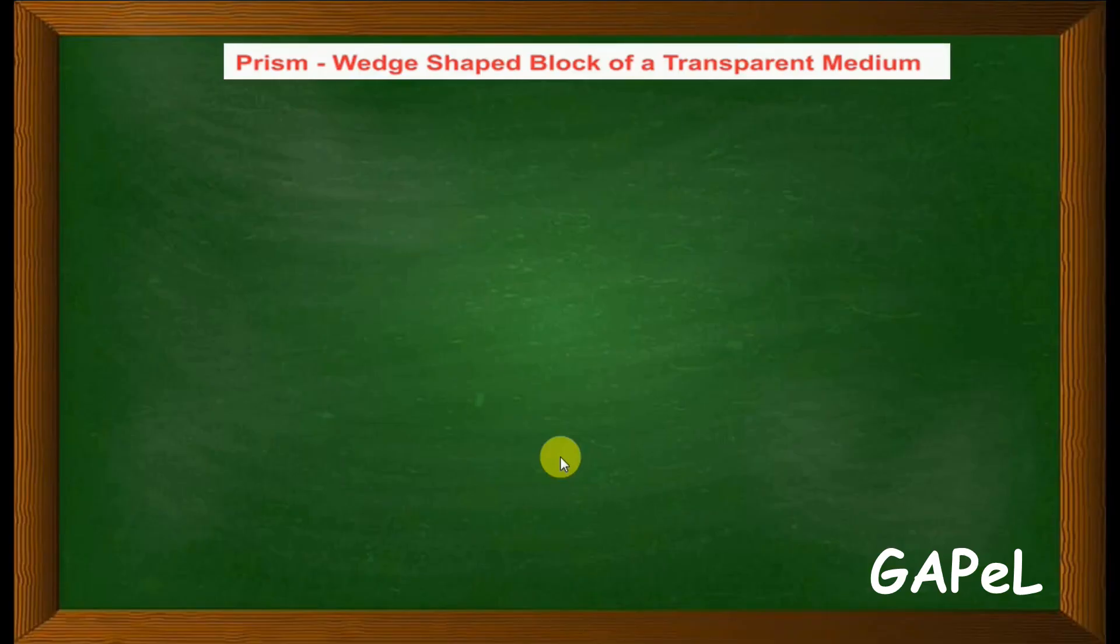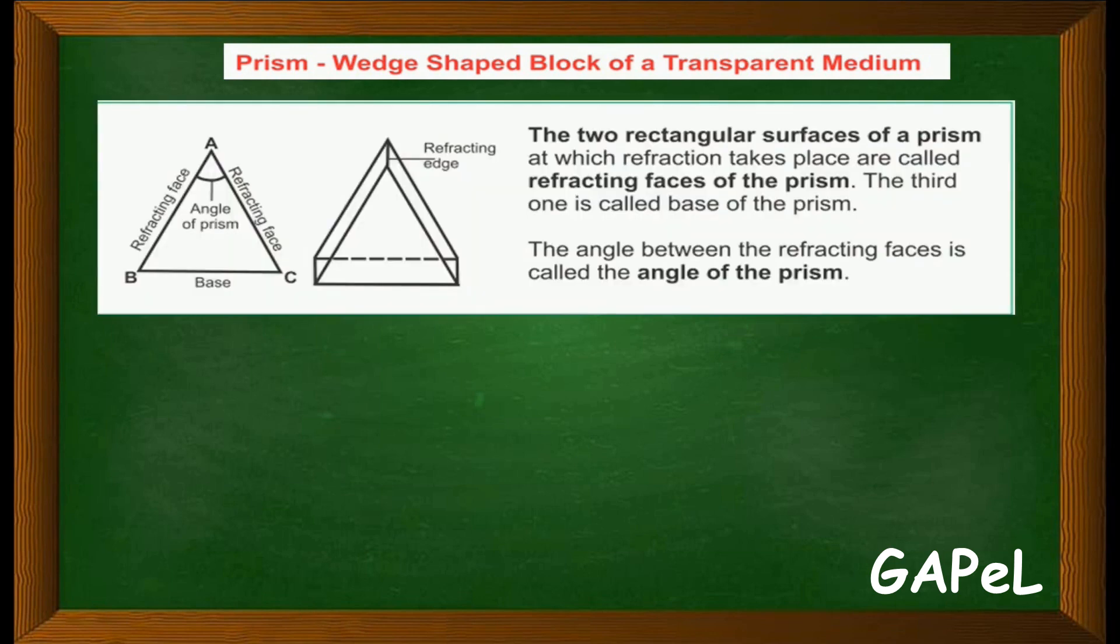Next we will learn about the prism. A prism is basically a wedge-shaped block of a transparent medium. The prism has two refracting surfaces and one base. Two rectangular surfaces are joined together - this is one refracting surface.